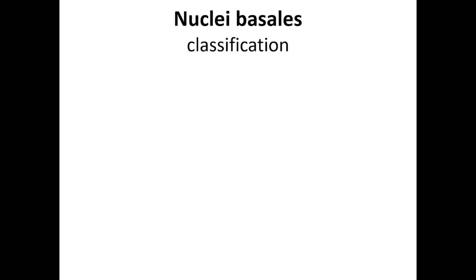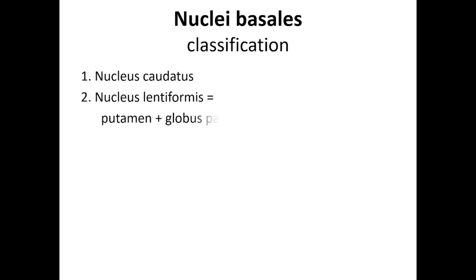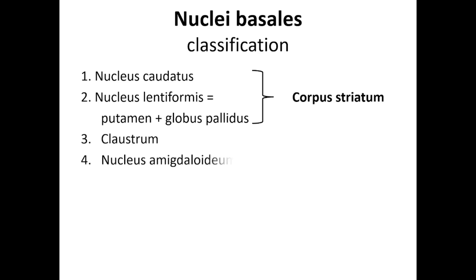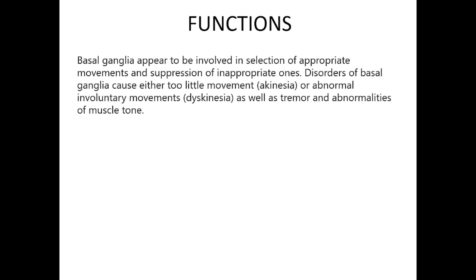The classification of the basal ganglia is as follows. Basal nuclei or basal ganglia appear to be involved in the selection of appropriate movements and suppression of inappropriate ones. Disorders of basal ganglia cause either too little movement — akinesia — or abnormal involuntary movements — dyskinesia — as well as tremor and abnormalities of muscle tone.